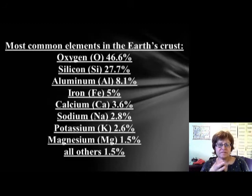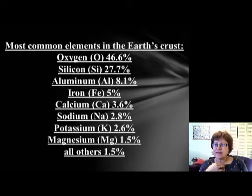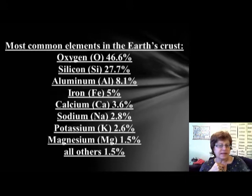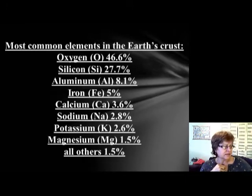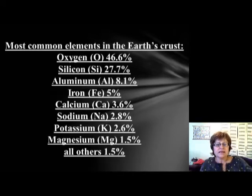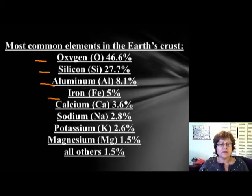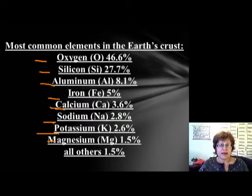This is the fifth segment of the mineral chapter. Last segment I stopped at the most common rock-forming minerals, which only contain seven elements. The Earth's crust contains seven or eight major elements: oxygen, silicon, aluminum, iron, calcium, sodium, potassium, and magnesium — that's eight.